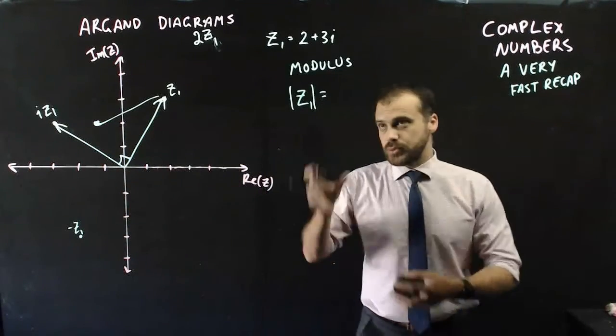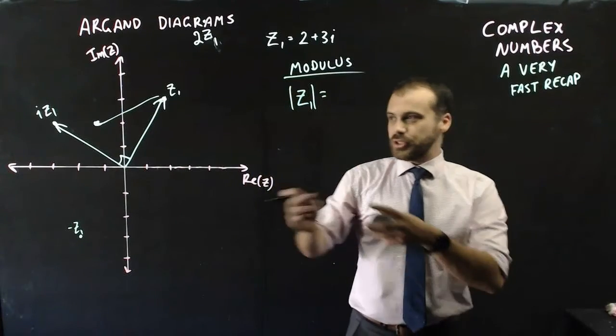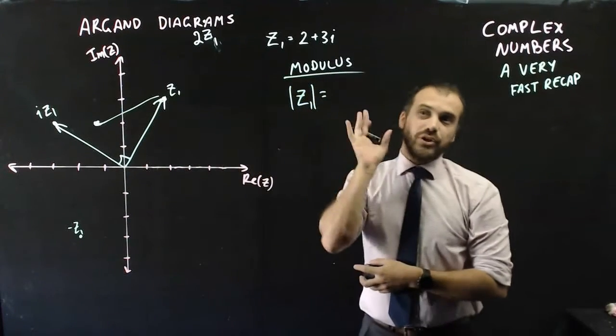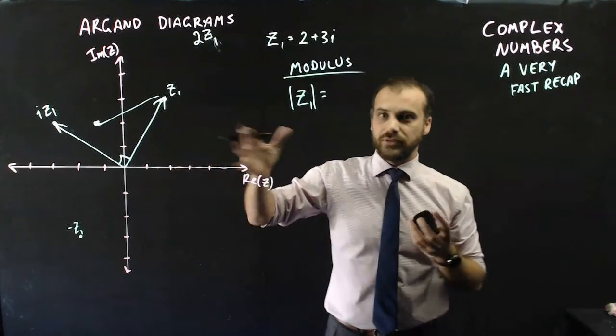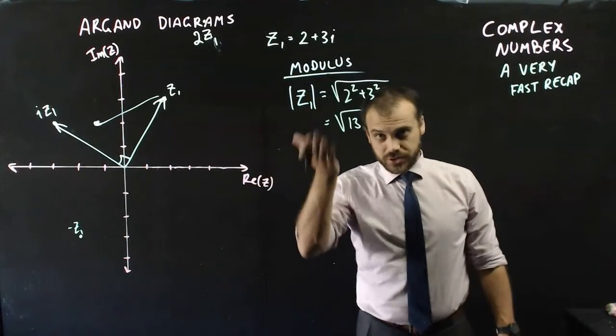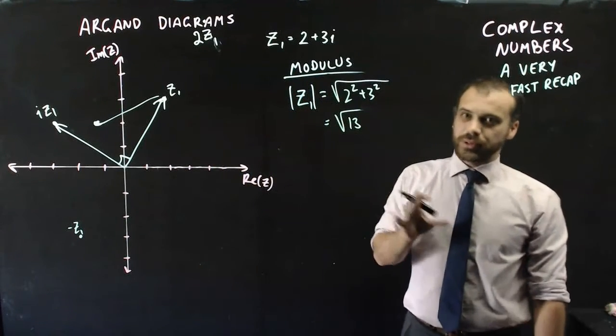So speaking of vectors, we can also start talking about something called the modulus, which is really just the length or the magnitude of the complex number. And we do it the same way that we would find any other length of a vector. The modulus is useful because we'll talk about polar form a little bit later on.